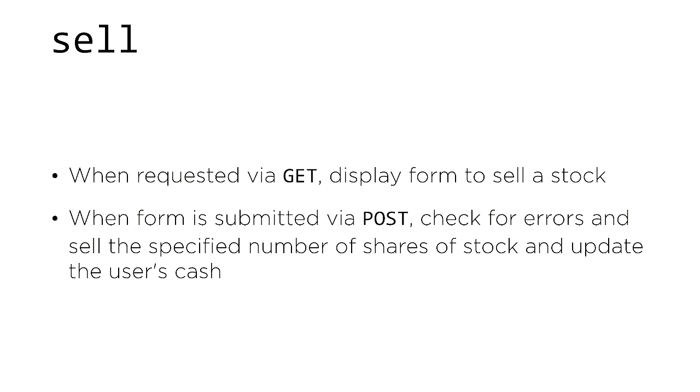Next, give users the ability to sell a stock. When the user requests your sell route via GET, display a form allowing them to choose which stock they currently own they'd like to sell, and how many shares. When the user submits that form via POST, check for possible errors — make sure the user actually has the number of shares they're trying to sell and that they can't sell a negative number of shares — then sell the specified number of shares and update the user's cash balance to reflect the sale.